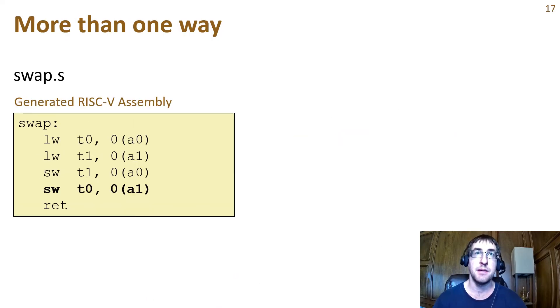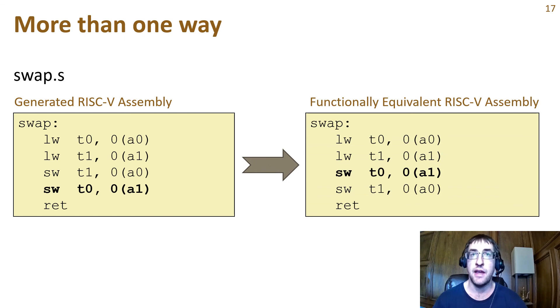This function has many ways its assembly can be generated. Here is a second way to implement the same function in RISC-V by switching the order of the stores back to memory. After you understand more about how the processor works, especially about pipeline data hazards, you should have some intuition about which approach, if either, might be better.